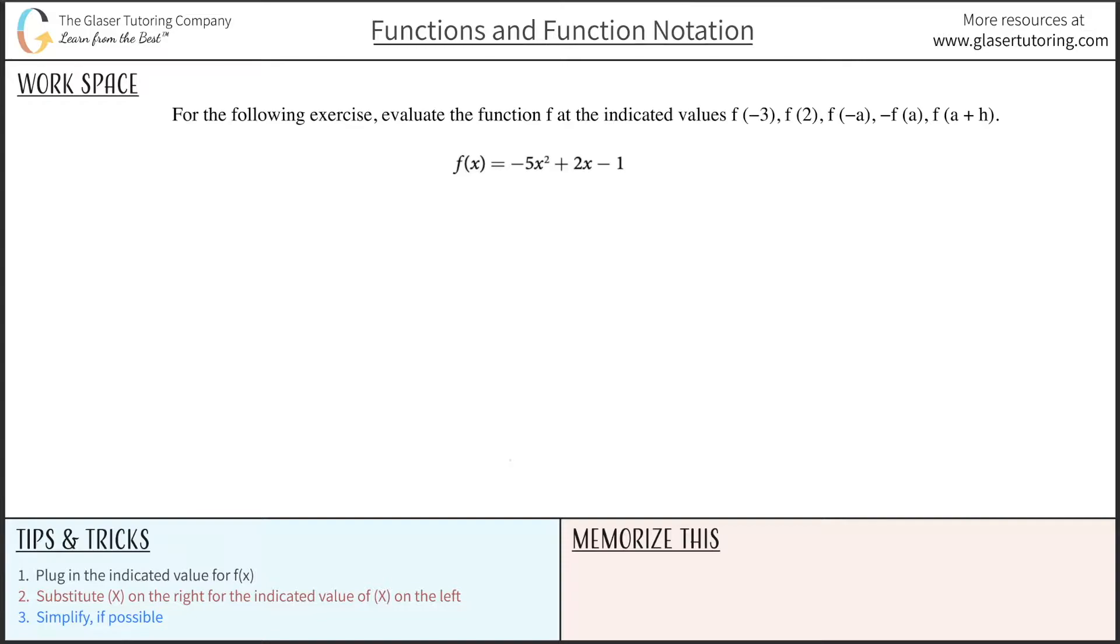For the following exercise, evaluate the function f at the indicated values. The first one will be f of negative 3. Our job basically is to take this particular function that they gave us and try to find out the f of negative 3. So we can follow these steps at the bottom. The first step is to take the indicated f of x value that they've told us and just plug it on in for f of x.